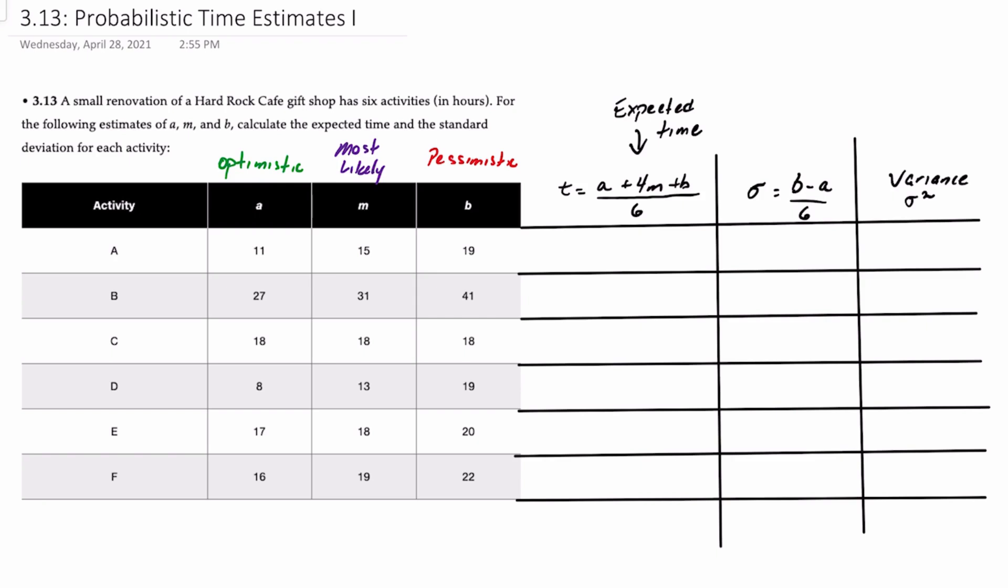Here's the data for our problem. We have a small renovation of a Hard Rock Cafe gift shop that has six activities with hours, and we are provided with estimates of A, M, and B. Our objective is to calculate the expected time and the standard deviation for each activity.